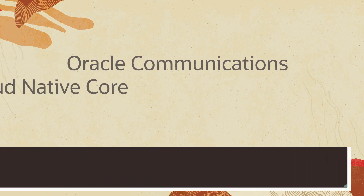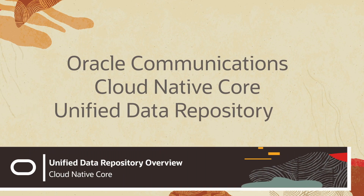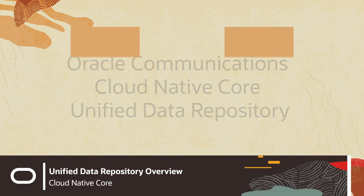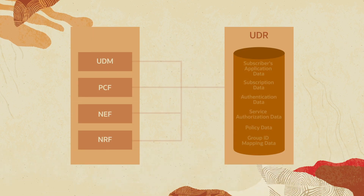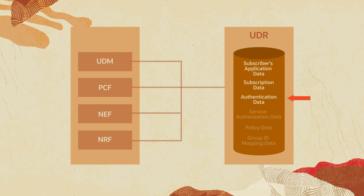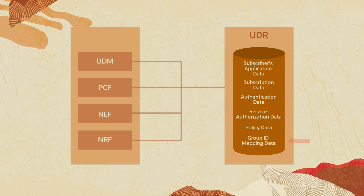Oracle Communications Cloud Native Core Unified Data Repository, or UDR, is a 3GPP-defined 5G network function. It stores subscribers' application data, subscription data, authentication data, service authorization data, policy data, and group ID mapping data.